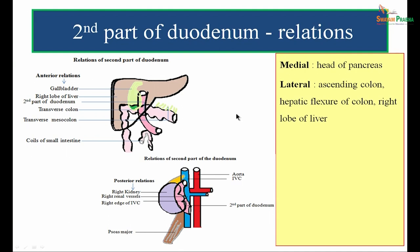The relations of the second part: anteriorly — gallbladder, right lobe of liver, transverse colon, and transverse mesocolon; posteriorly — right kidney, right renal vessels, and the right edge of the inferior vena cava; medially — the concavity is occupied by the head of the pancreas; laterally — ascending colon, hepatic flexure of the colon, and the right lobe of liver.